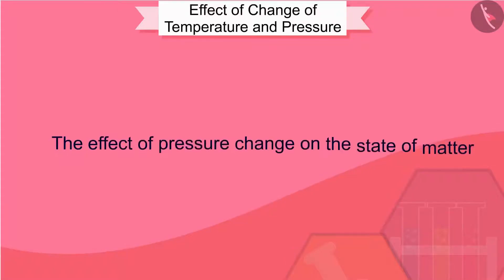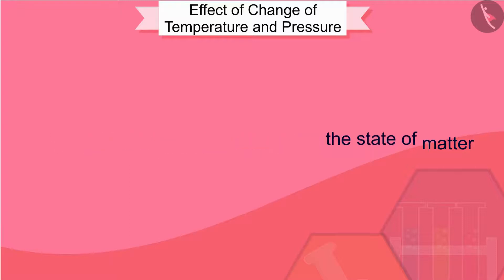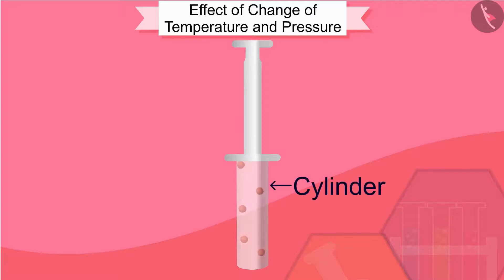Let us now see the effect of pressure change on the state of matter. Let us understand this by an activity. You can see that the gas has been filled in a cylinder and this is how the piston is mounted on it. Now, what will happen if we increase the pressure on this piston?